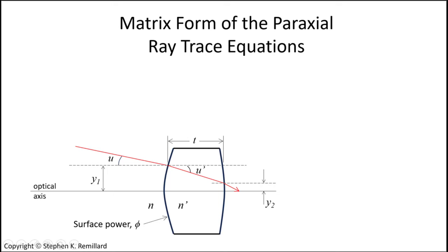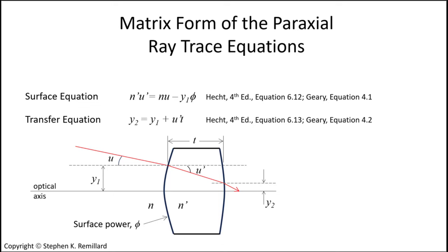There are two working equations that describe the propagation of paraxial rays through an optical system. At any surface, refracted and reflected rays follow a path described by this variation on Snell's Law, which is written in terms of the angle relative to the optical axis rather than the surface normal.